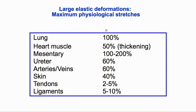The elastic deformations of most soft tissues are large enough that we must use the finite strain tensors. Here are some examples of maximum physiological stretches in different tissues. In the lung, a stretch of 100% would not be unphysiological. In heart muscle, thickening of the ventricular walls can be as high as 50% during systole. The mesentery can stretch by over 100%, perhaps as much as 200%. Ureter, arteries, and veins can extend by 60%. Skin can stretch by 40%, and ligaments and tendons in the range of 2% to 10%.